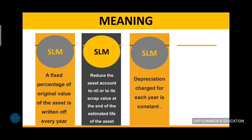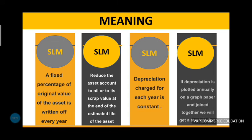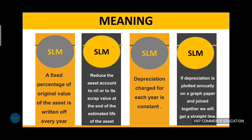The depreciation charge for each year is constant. If depreciation is plotted annually on a graph paper and joined together, we will get a straight line. This is why it is called the straight line method.